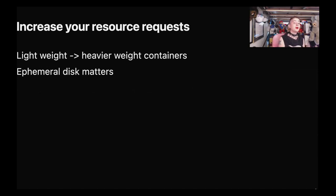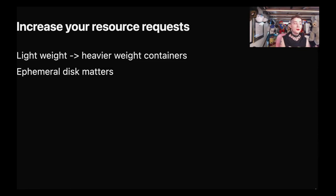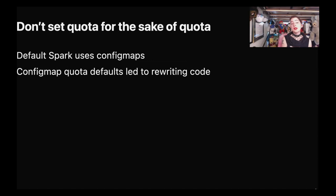You're going to need to increase your resource requests. YARN containers are very fuzzy definitions of containers; we have much stricter resource requirements in Kube. You're going to need to allocate more memory, and ephemeral disk starts mattering — that wasn't tracked at all previously. Another one: don't set quota for the sake of quota. Default Spark uses config maps, and we ended up doing a large rewrite of some code because of a config map quota. It turns out that config maps weren't as expensive as we had assumed. When you're starting to set quota, definitely take the time to see if this is actually a constrained resource.